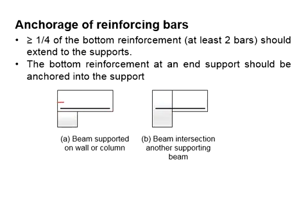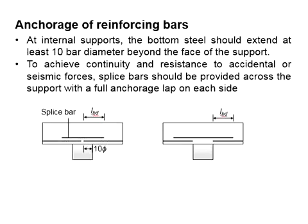There is a required minimum length of anchorage. At the internal support, the bottom steel should be extended into its support at least 10 times the bar diameter beyond the support. In order to achieve continuity and resistance to accidental and seismic forces, a splice bar should be provided across the support with a full anchorage length.